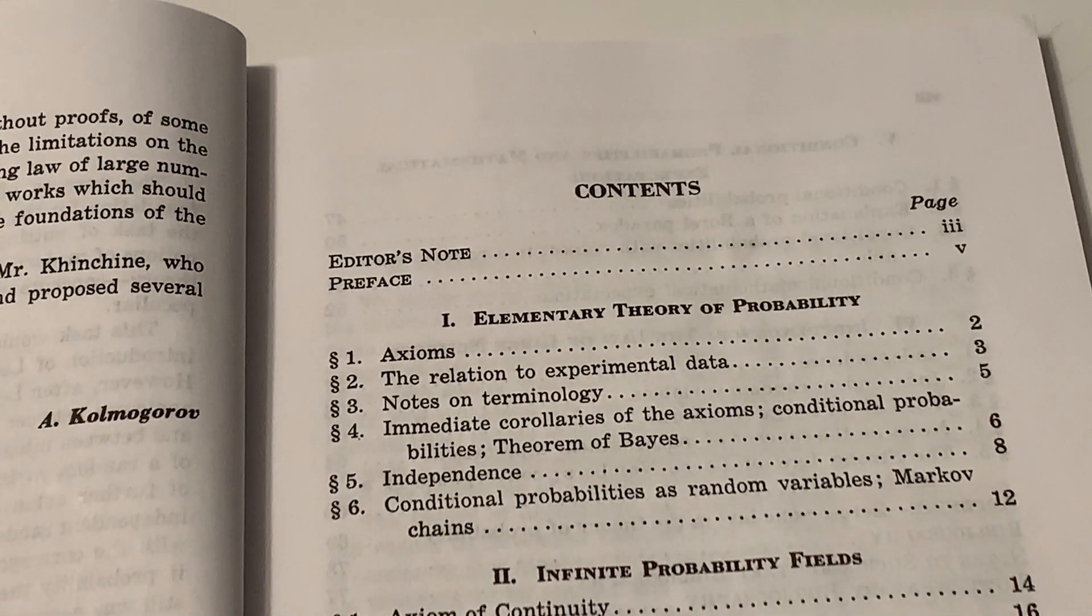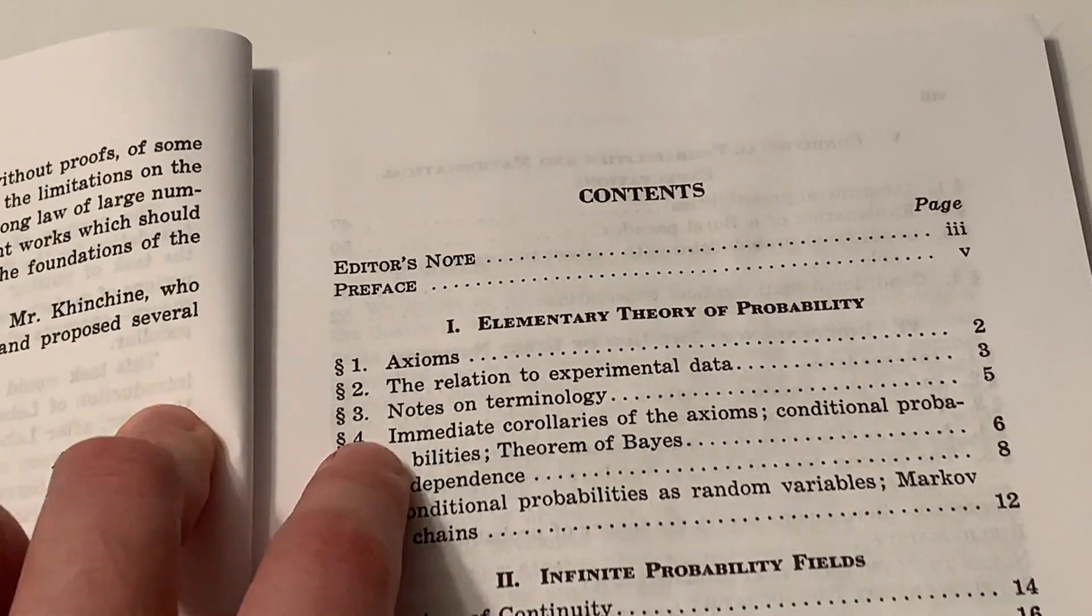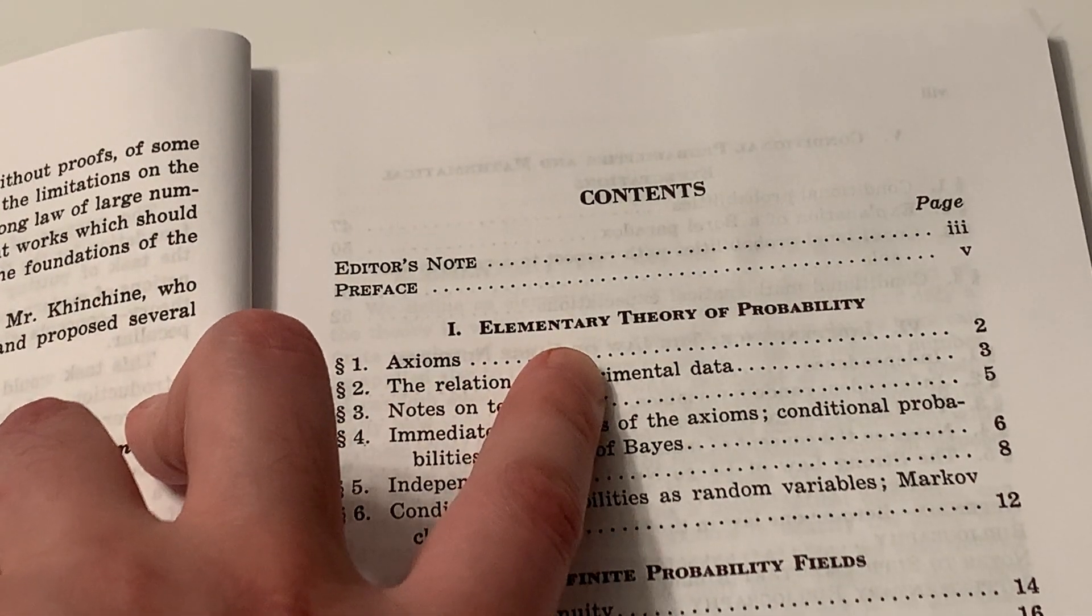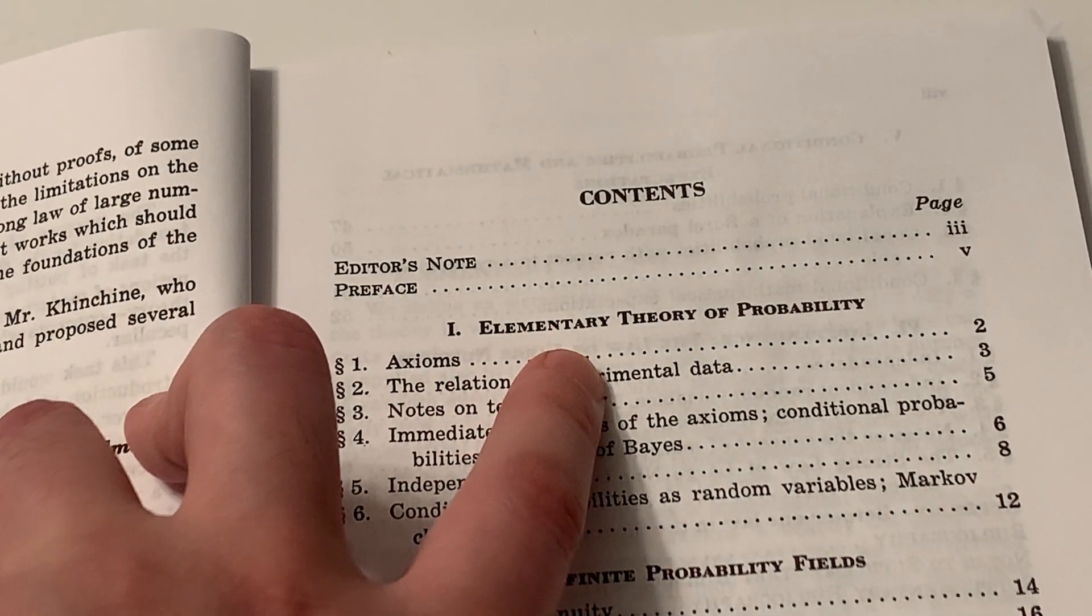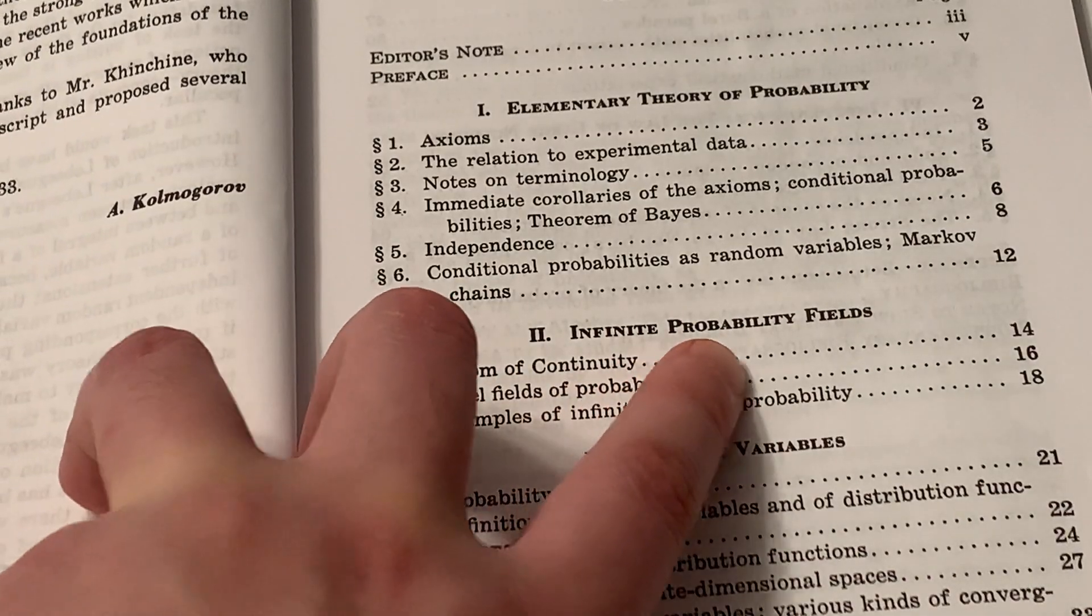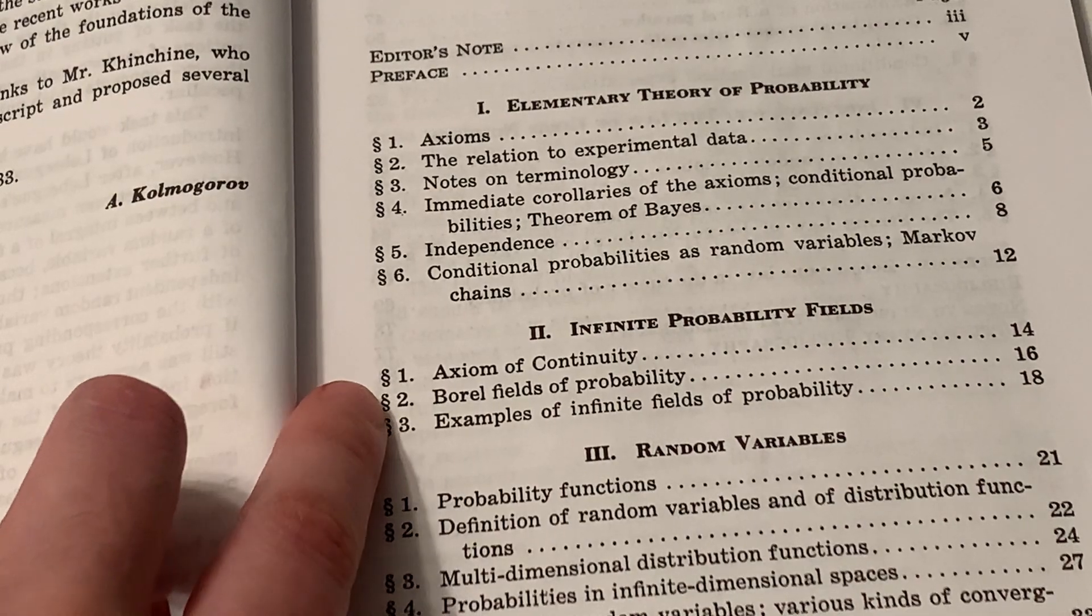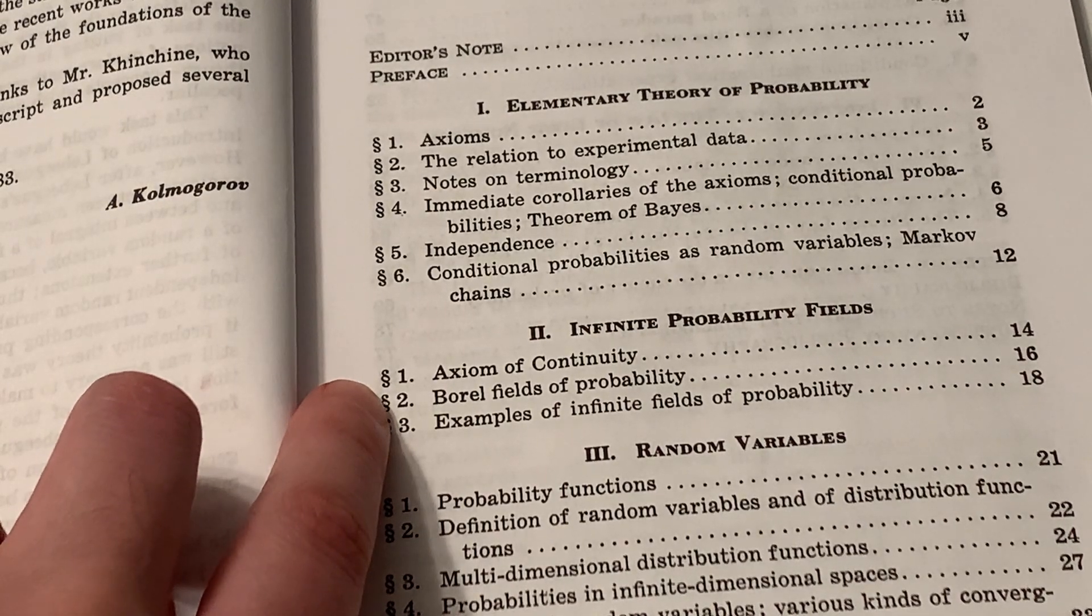So this is the content. The first chapter is called the elementary theory of probability. Kolmogorov refers to random experiments that only have a finite set of outcomes. And then we have infinite probability field. This is where the abstract theory of measure and integration started to exhibit its power.